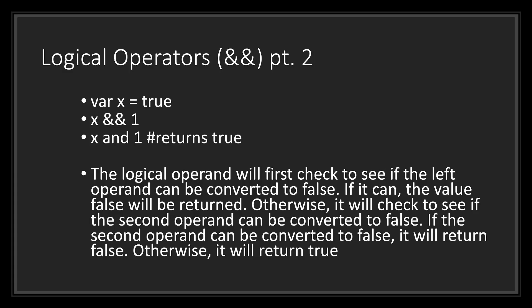Otherwise, it will check to see if the second operand can be converted to false. If the second operand can be converted to false, it will return false. Otherwise, it will return true. Since variable x is equal to true, our logical AND operator will first check the left operand, the variable x. Since x is true, the logical operator moves on to the right operand, in this case 1. Now 1 can be converted to true, and because x and 1 are true, our logical operator returns back true.